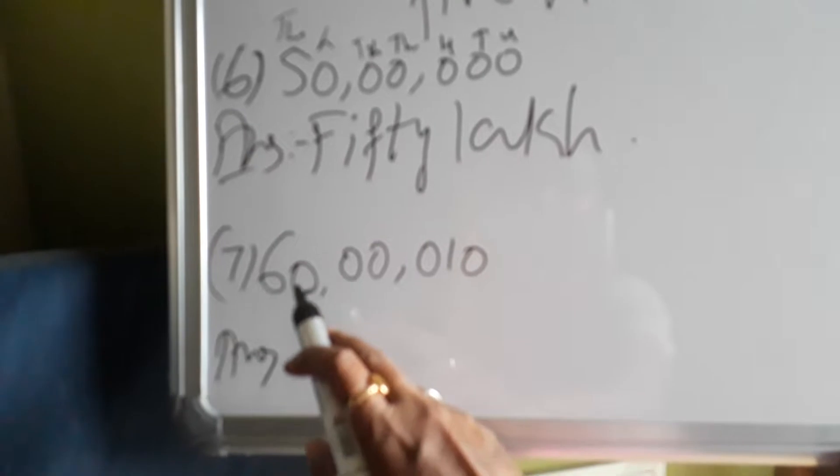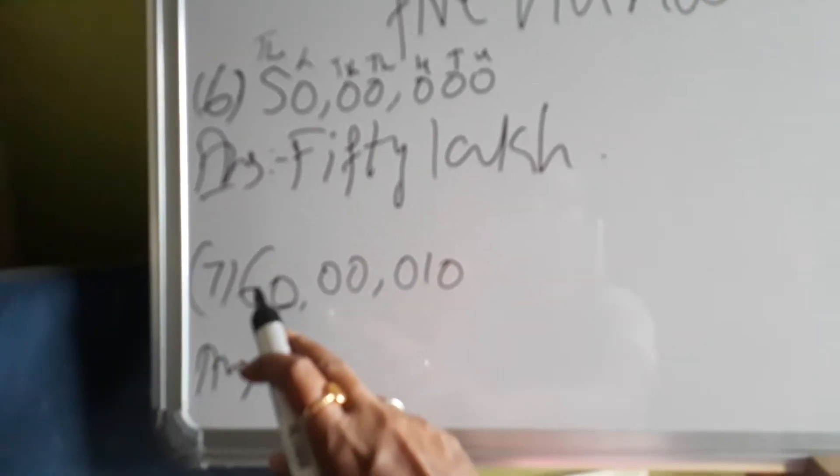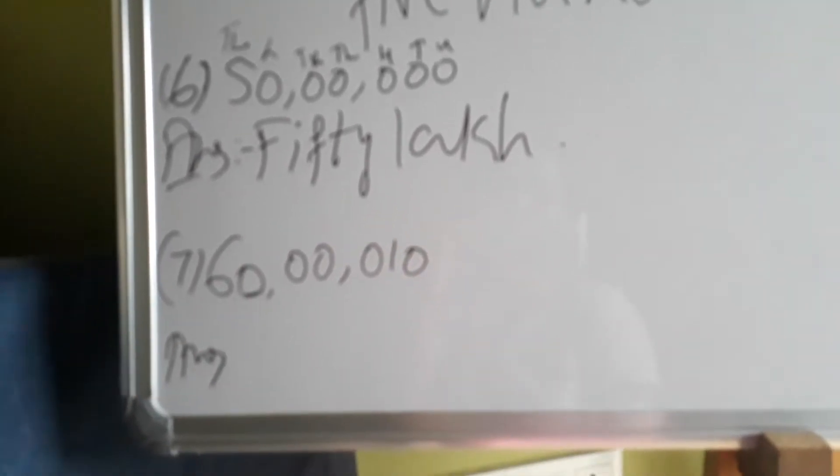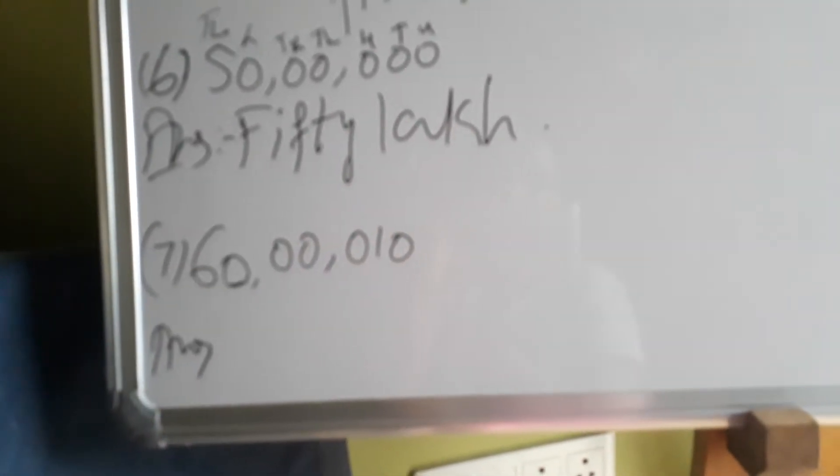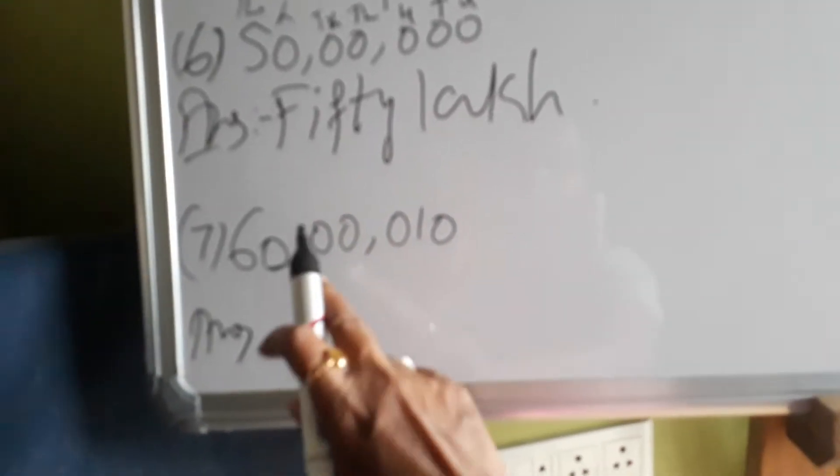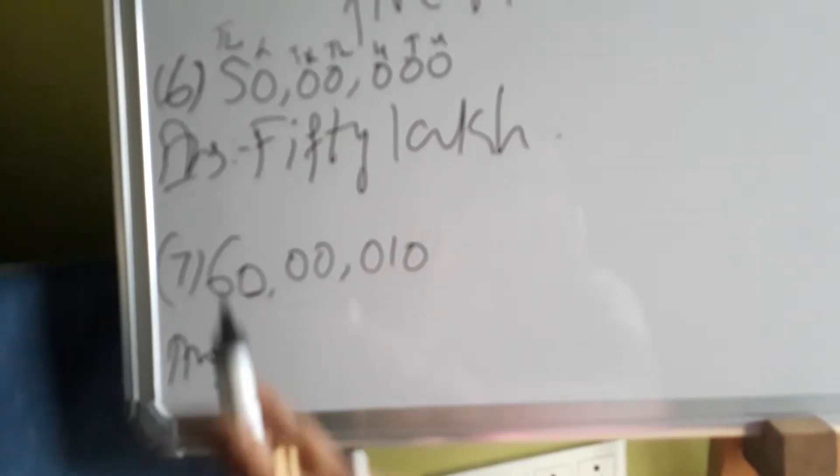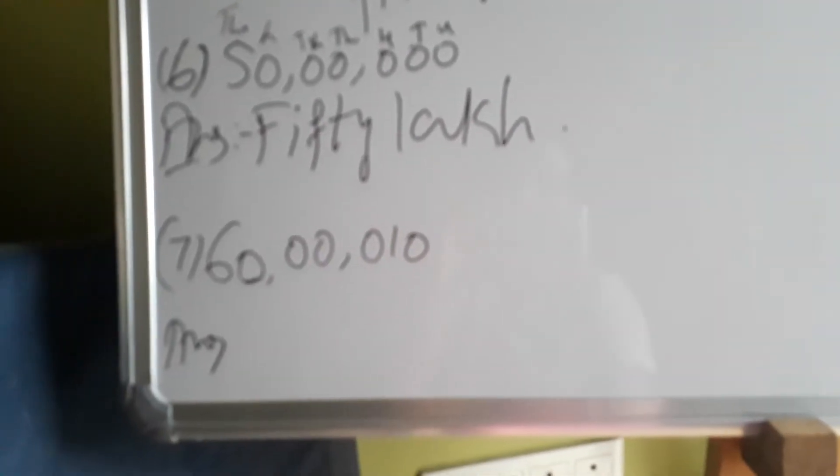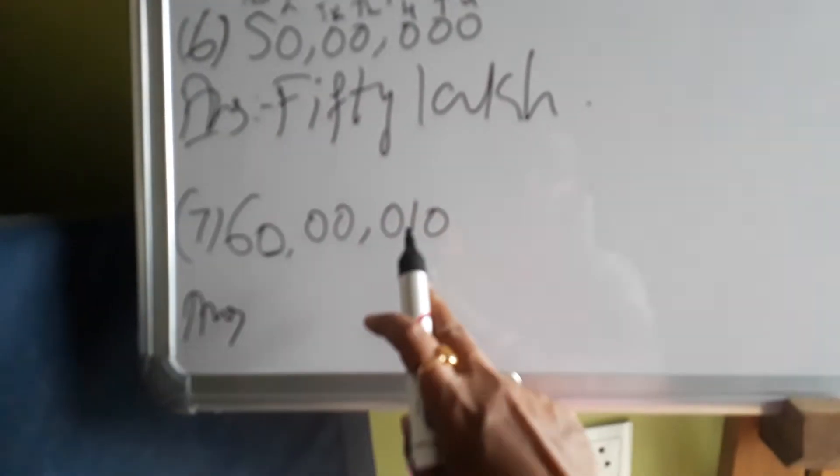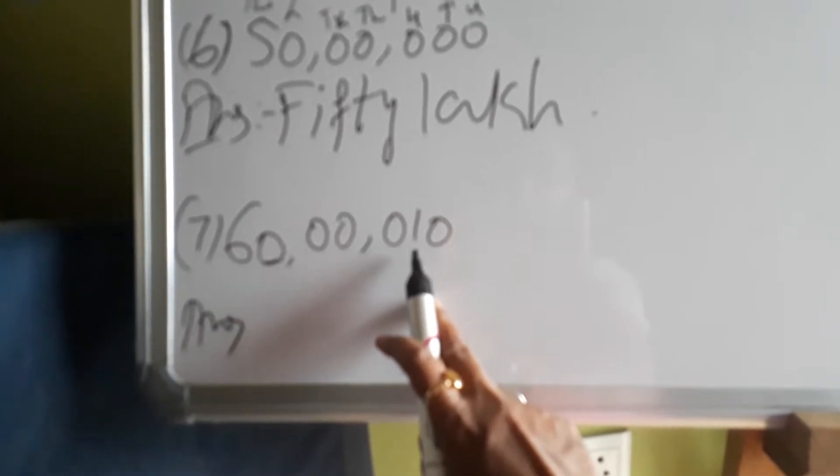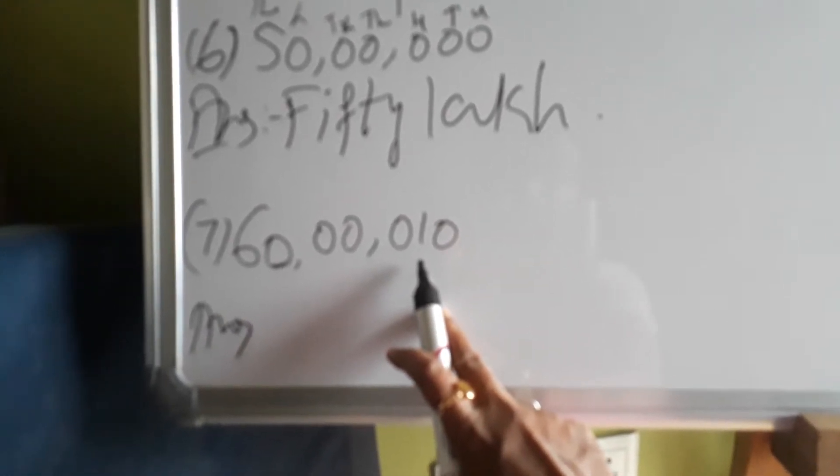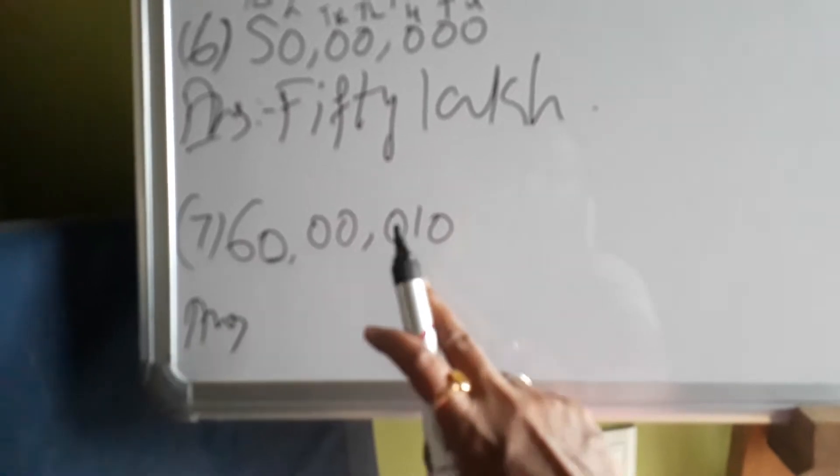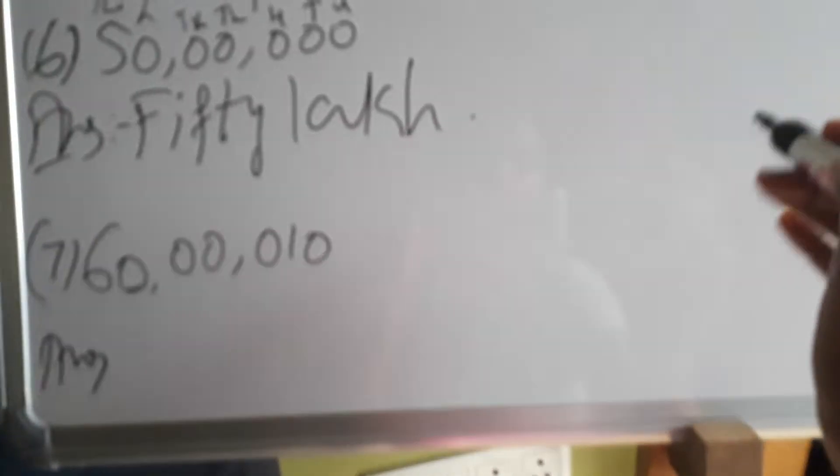So units, tens, hundred, thousand, ten thousand, lakh, ten lakh. Six is in ten lakhs place, so that makes 60 lakh. Zero is in lakhs place, so nothing. Ten thousands place nothing, thousands place nothing, hundreds place nothing, tens place one. So one into ten, ten. Zero into ones place, zero.